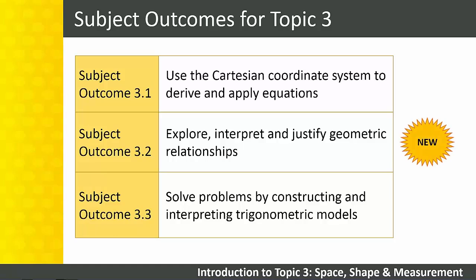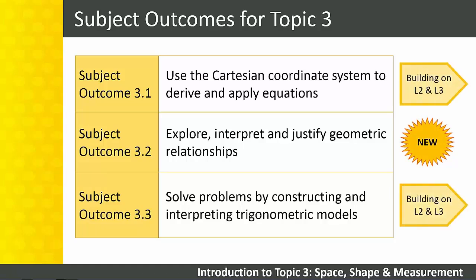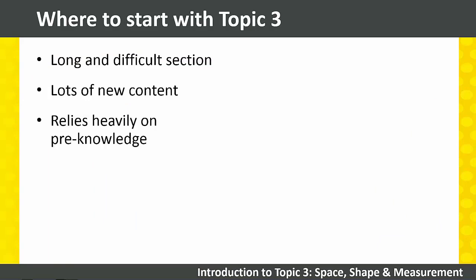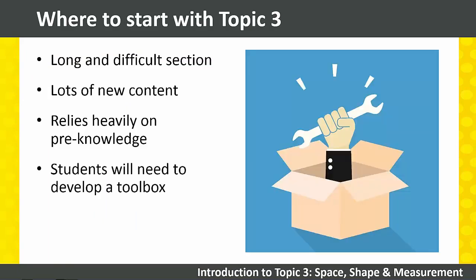Geometry is essentially new in Level 4, with only the Theorem of Pythagoras being covered previously. The coordinate geometry and trigonometry sections are also new content, but they build on the work covered in these sections in previous levels. Topic 3 is a long and difficult section that students really struggle with. Most of the content is brand new in Level 4, but it relies heavily on pre-knowledge from previous levels. You will need to give students a toolbox to work with, and then help them to identify when to apply which tools. We will follow the order of the subject guidelines in this support package.